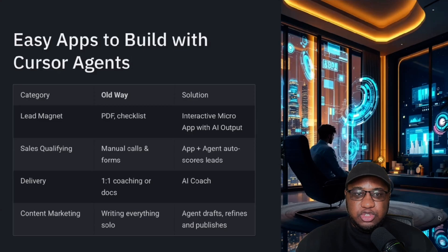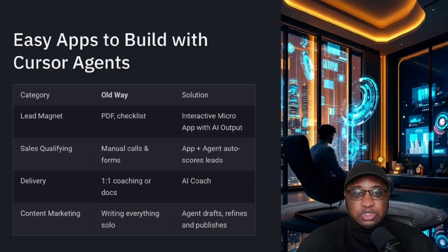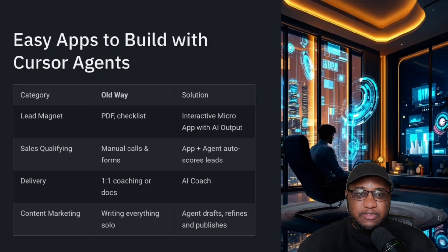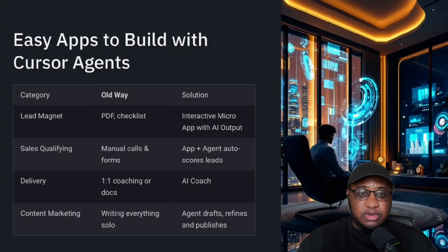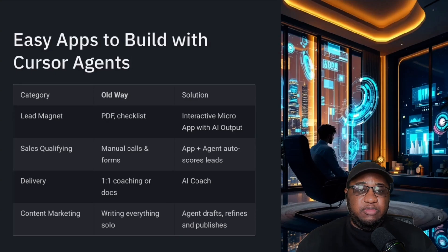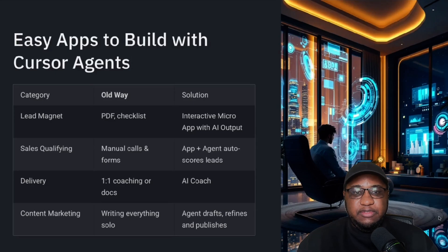Around delivery: a lot of coaches do one-on-one services, and sometimes the bottleneck is the coach themselves — they can only do so many one-on-ones. There's a lot of offers now around having an AI coach within the business. Instead of doing all the one-on-ones, someone can get their quick questions answered by the AI coach. And when they need higher-level strategy from the actual person, they can book a call or take the next step in that person's business.